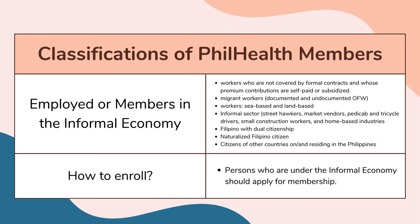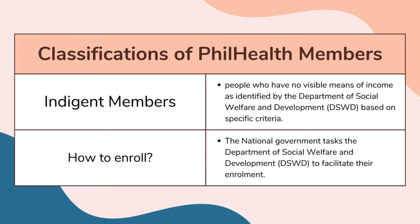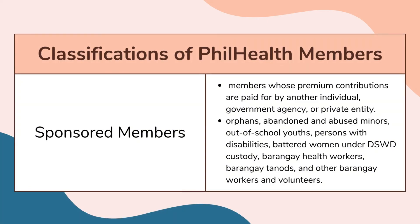Indigent members are people with no visible means of income as identified by the Department of Social Welfare and Development (DSWD) based on specific criteria — the national government tasks the DSWD to facilitate their enrollment. Sponsored members are those whose premium contributions are paid by another individual, government agency, or private entity, including orphans, abandoned and abused minors, out-of-school youth, persons with disabilities, battered women under DSWD custody, barangay health workers, barangay tanods, and other barangay workers and volunteers.